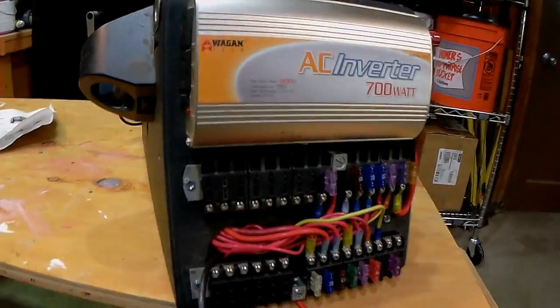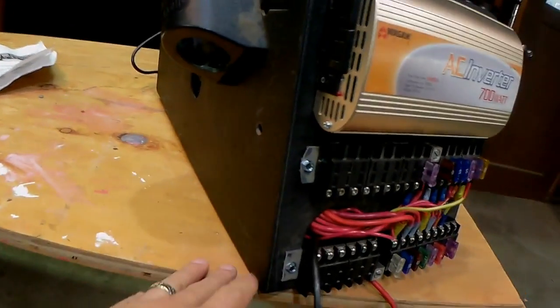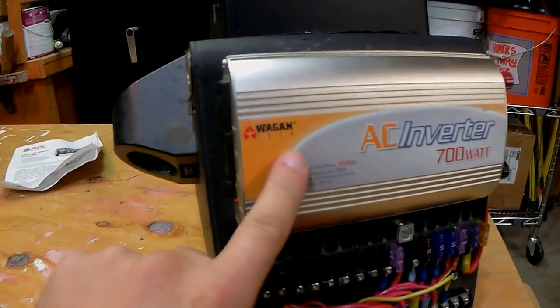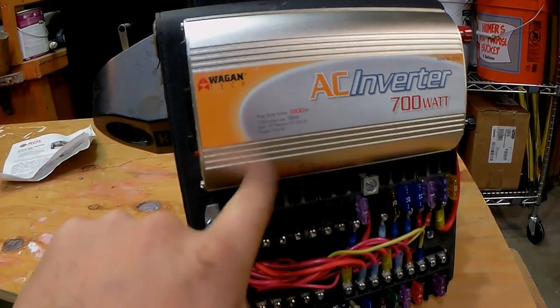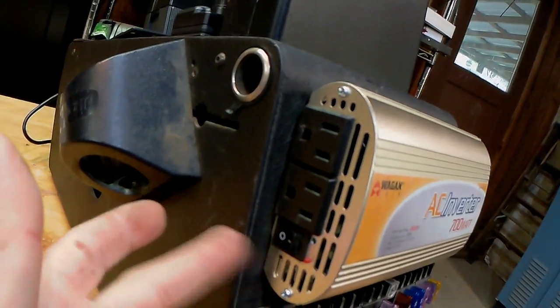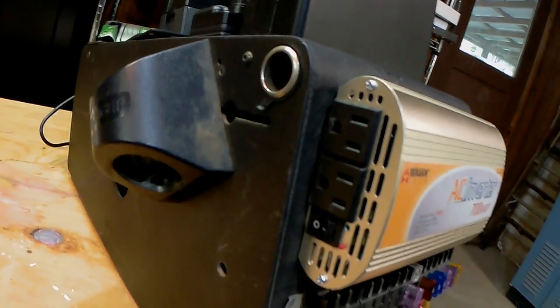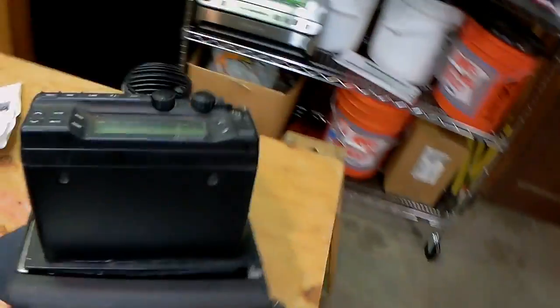Something else I did was put the power distribution panel on this assembly itself, along with adding an AC DC to AC converter, or inverter rather, so I could have regular 110 AC voltage to power up stuff.